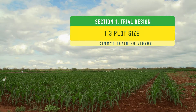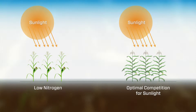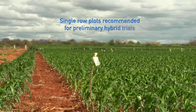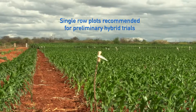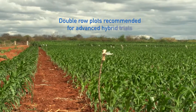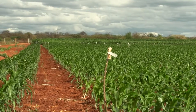Due to reduced crop vigor under nitrogen stress, inter-row competition for sunlight is not as important as in optimal trials. As a result, single row plots are often used to screen preliminary hybrid trials. It is recommended that two-row plots be used in advanced hybrid screening.